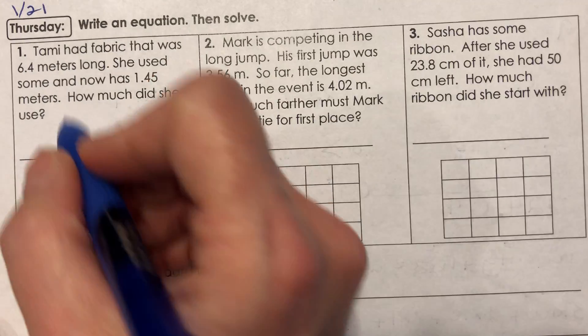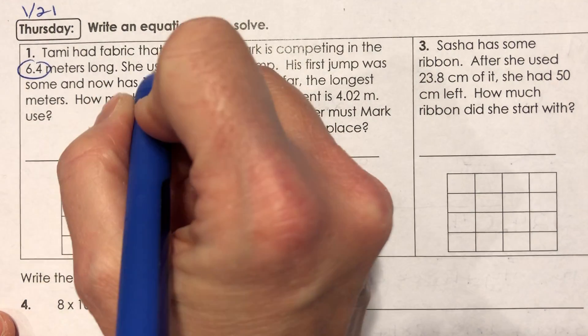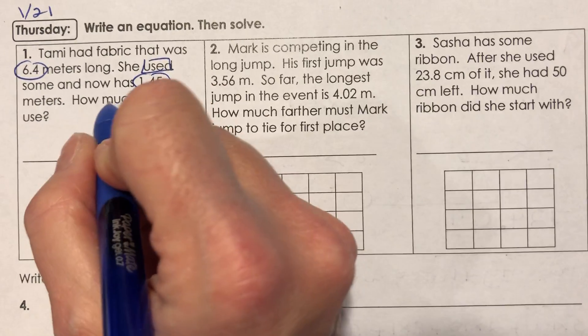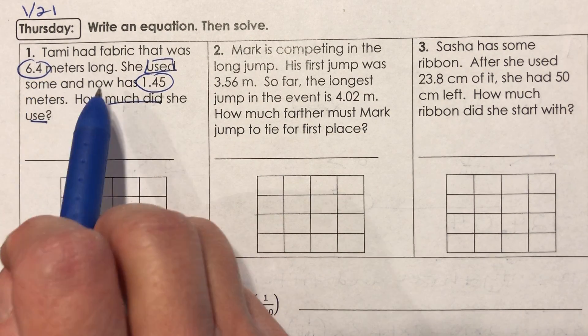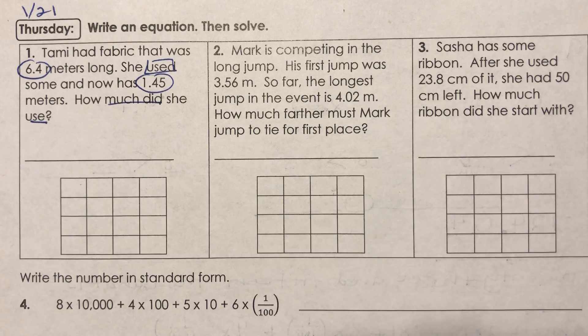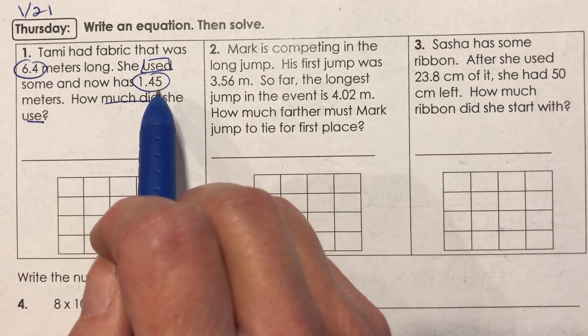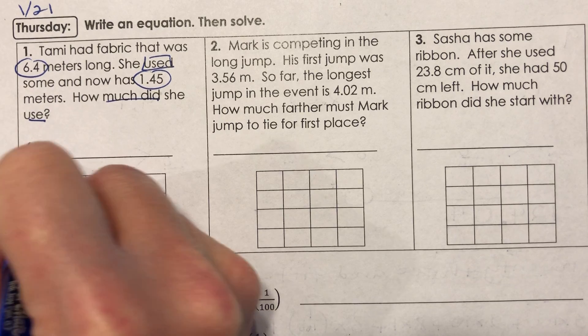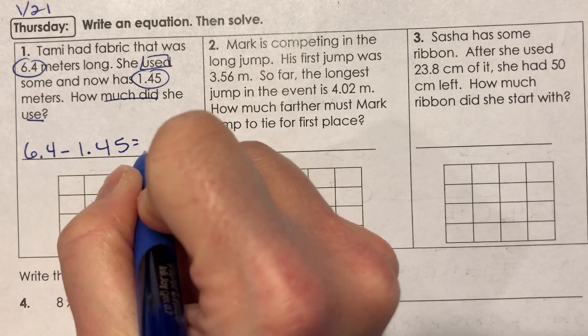So lovely little math stories here. Tammy had fabric that was 6.4 meters long. She used some and now has 1.45 meters. How much did she use? So she had fabric that was 6.4 meters long and she used some, and now she has 1.45 meters that's left over. How much did she use? Well, they give you the total that she has and they tell you how much she has now, but they didn't tell you how much she used to get that total.